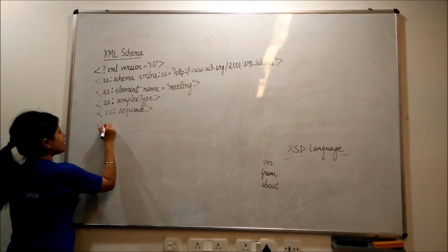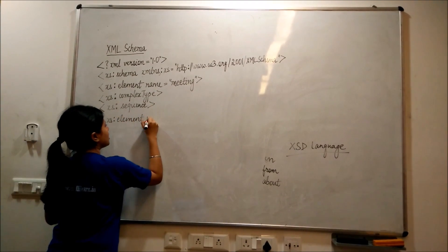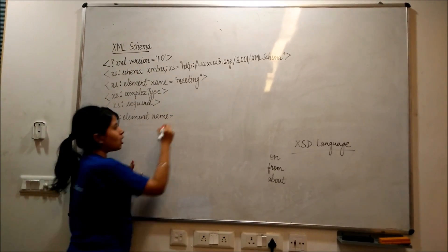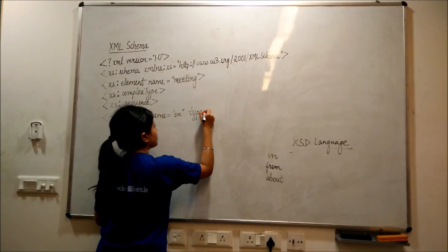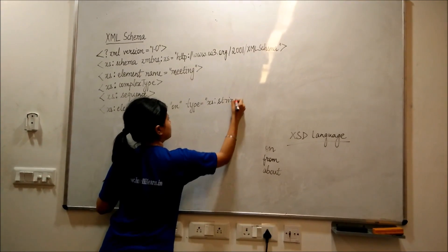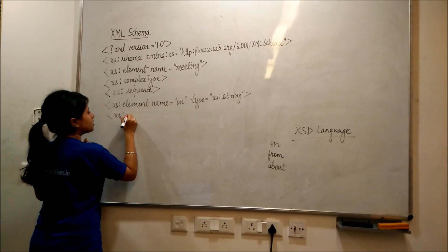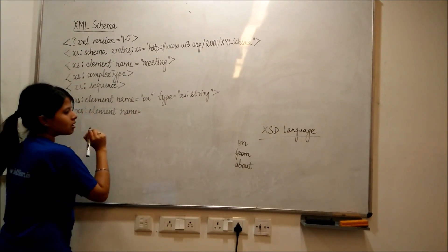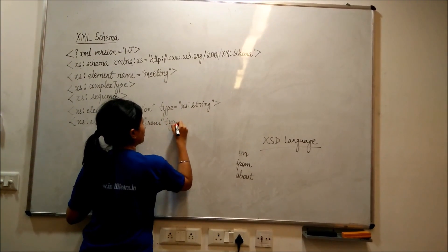Then we define xs:element with name 'on' and type as xs:string. Then xs:element with name 'from' and type as xs:string.